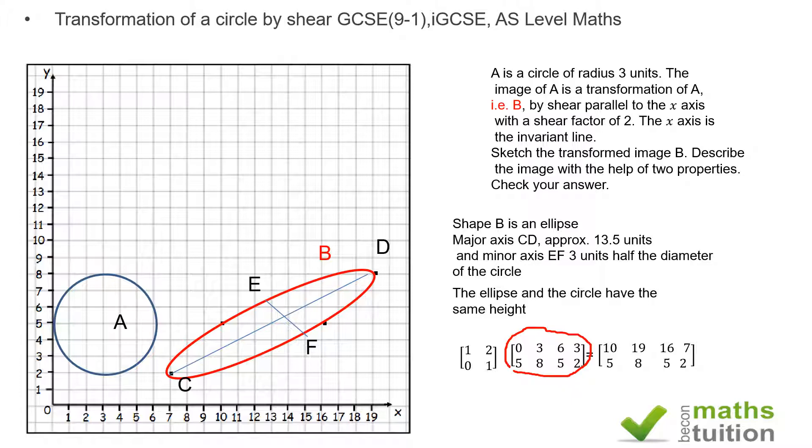Now if I look at these here, these are the four points I've considered: (0, 5), (3, 8), (6, 5), and (3, 2). Now if you do your matrix multiplication...